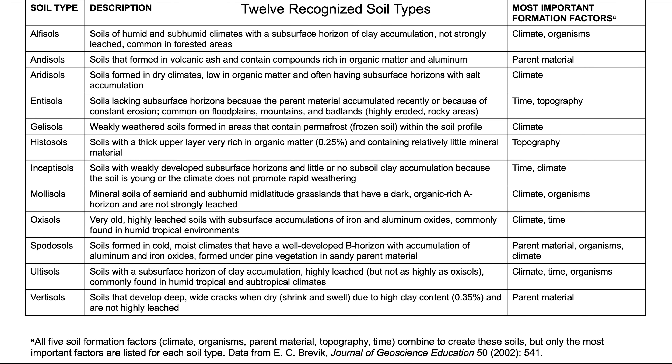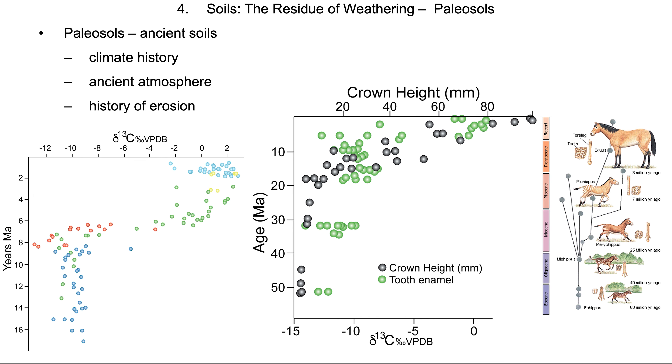We're not going to discuss soil types in detail, so you don't need to memorize their names or definitions. Just be aware that different soils form from different starting materials under different environmental conditions. We can characterize a past environment by looking at an ancient soil converted into sedimentary rock. These ancient soils, called paleosols, contain a lot of information providing details of how the environment changed over time.